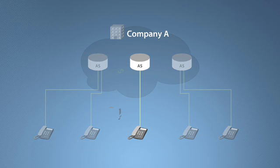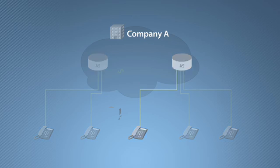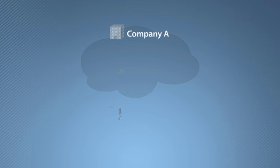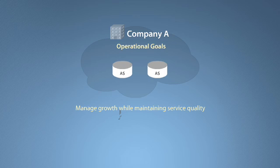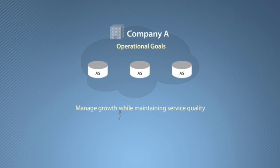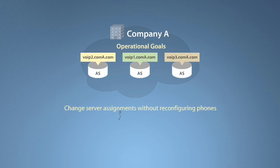From a technical perspective, the problem is the result of the tight coupling between the SIP endpoints and the SIP application server. Changes in the physical network have a direct impact on how the SIP phones access the service. To restore service quality, Company A must be able to manage growth without sacrificing quality of service and make changes to application server assignments without having to reconfigure the phones already in service.